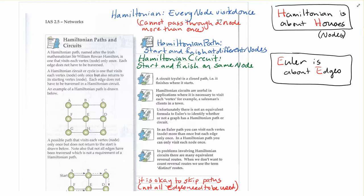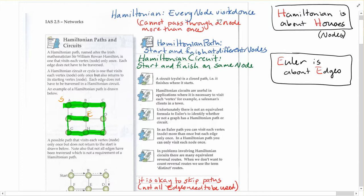So if we took a look at an example here, if I started at A, I could get to B, C, D, I, H, G, F, and E. And in this case, I've started and ended at different nodes, so it would be a Hamiltonian path.